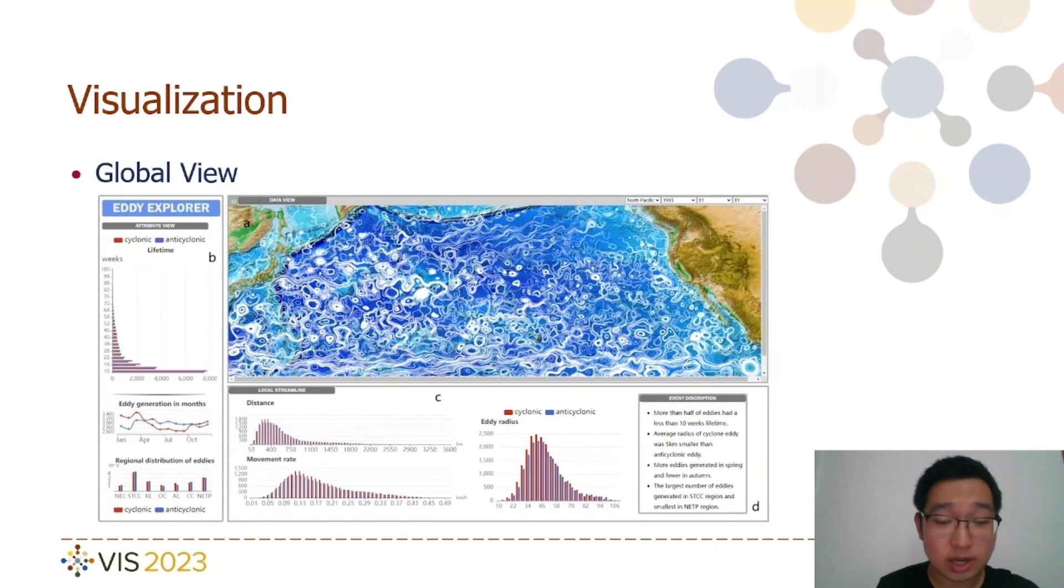Our visualization strategy is primarily based on a top-to-down design approach which comprises both global and local views. In the global view, we present high precision streamlines that span the entire ocean. The visualization allows users to grasp the overall patterns and dynamics of the ocean's flow field. Additionally, we perform comprehensive analysis of eddy characteristics across the entire ocean region. Through this analysis, we compare and contrast various eddies and complement these findings with statistical information and textual descriptions.